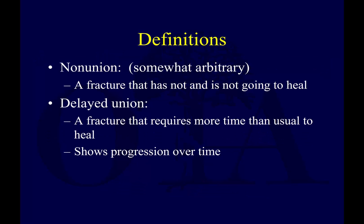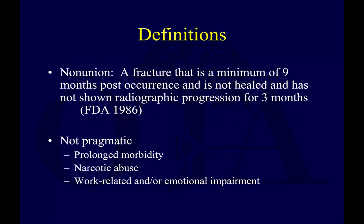Let's get through some definitions first. Non-union itself is somewhat arbitrarily defined. Essentially, it's a fracture that has not and is not going to heal. To some degree, there's a prediction you're making — you're saying this is not going to heal, as opposed to a delayed union, where it clearly hasn't healed yet and it's taken more time than usual, but it seems to be showing some progression.